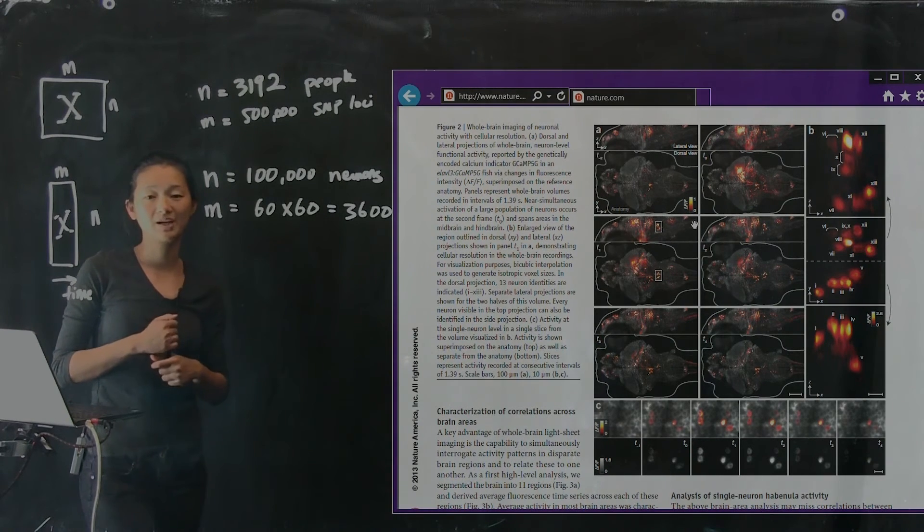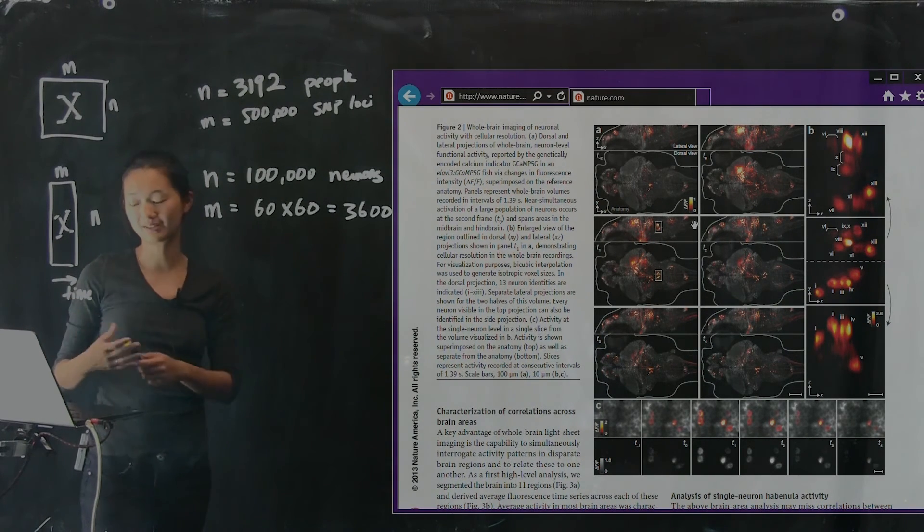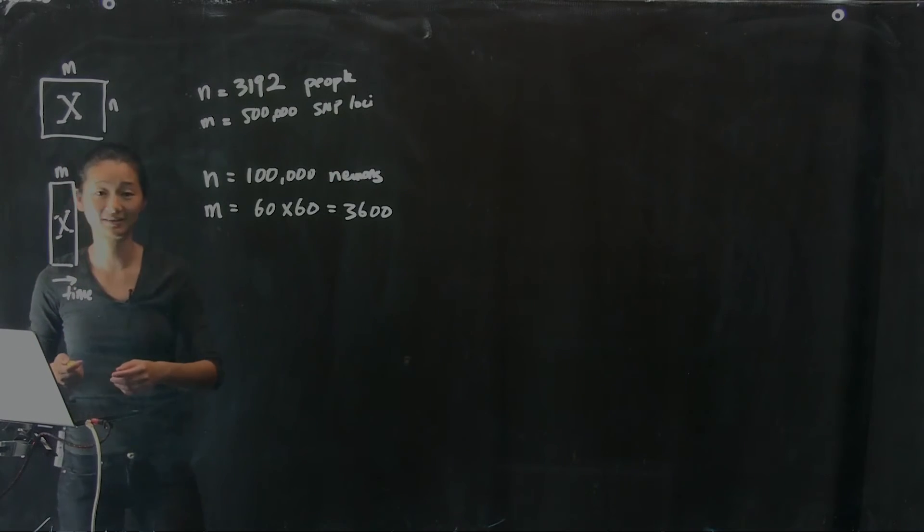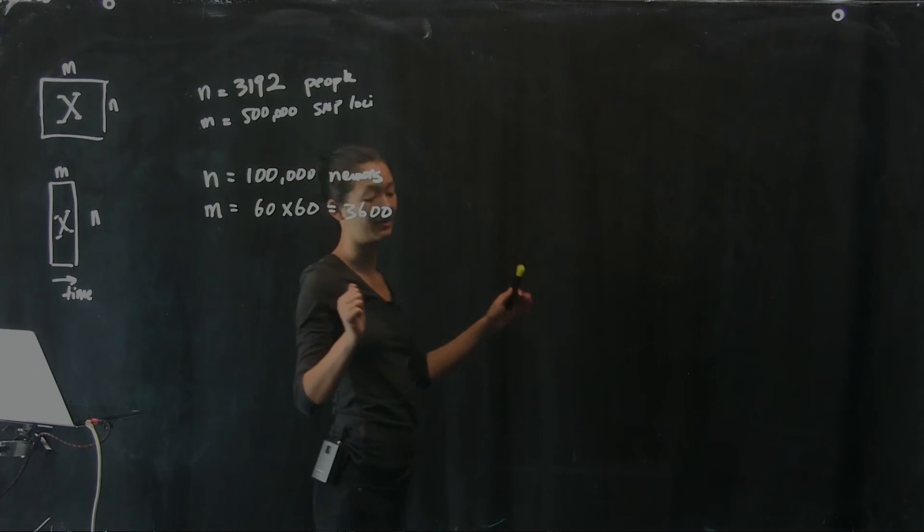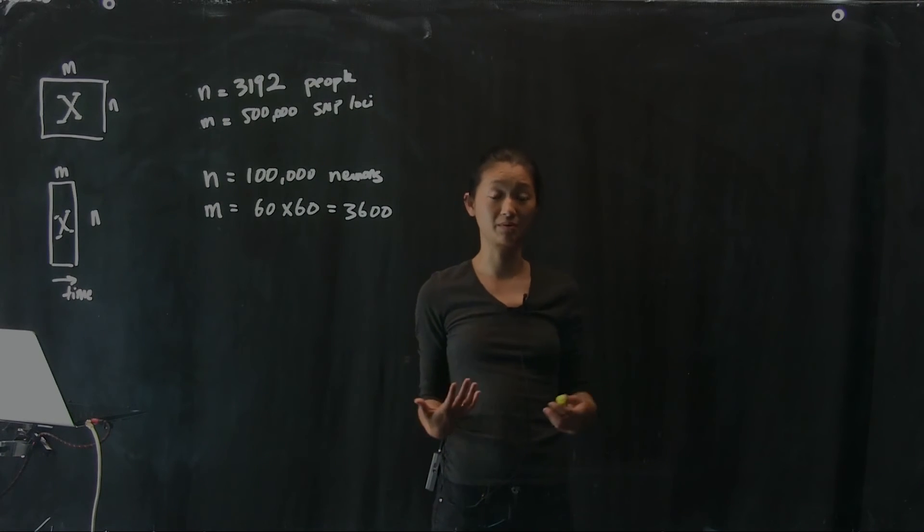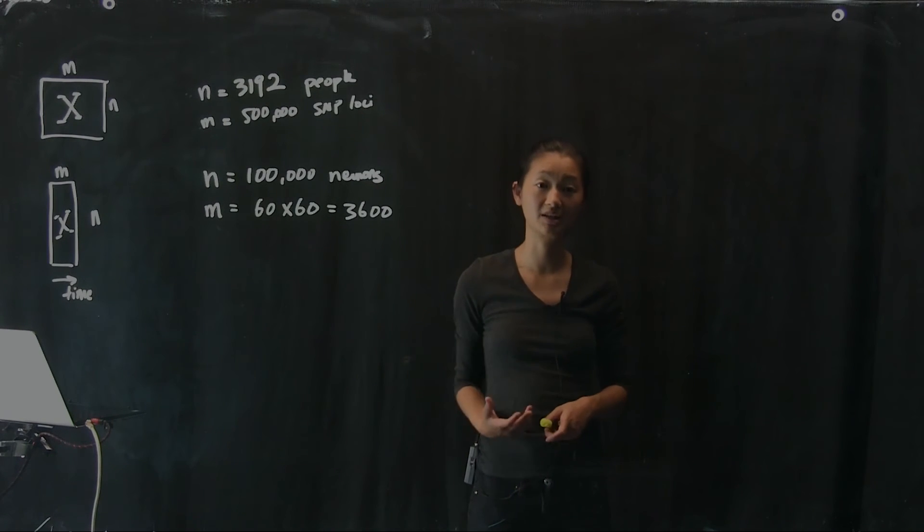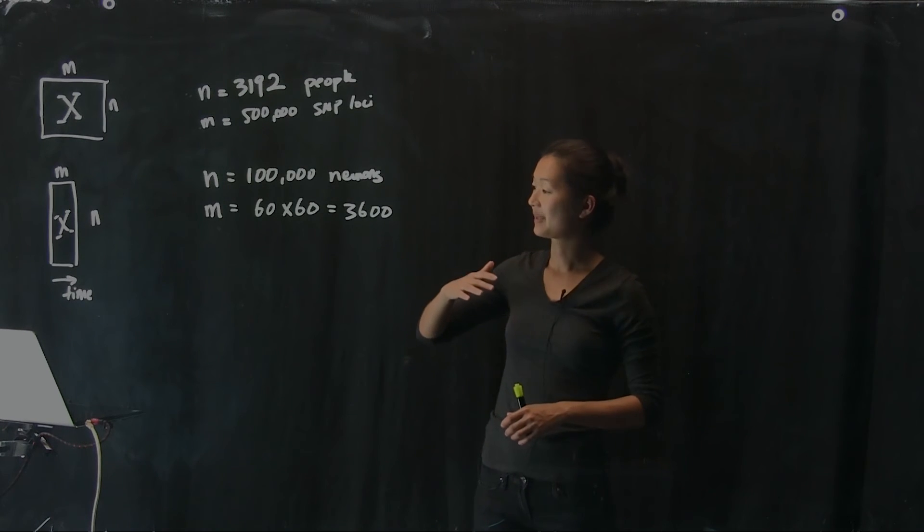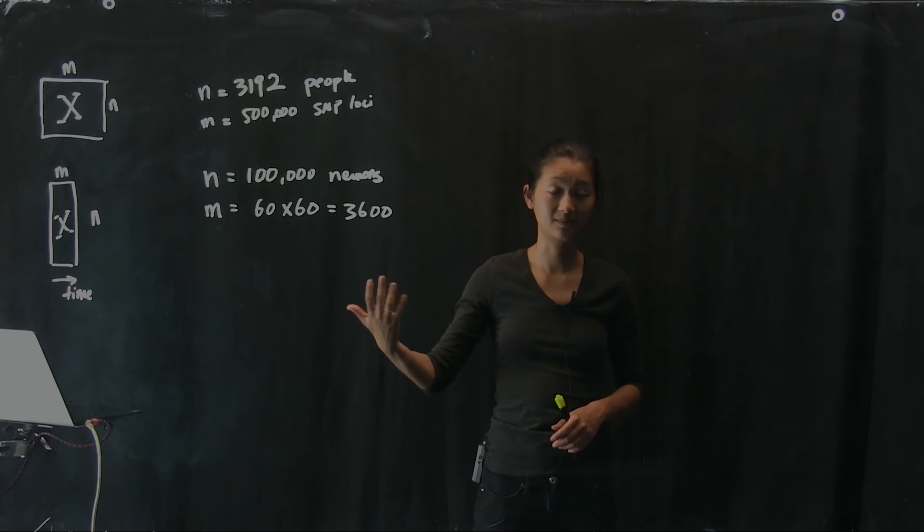And so if we're able to reduce the dimensionality of this X matrix and analyze the data that way, perhaps we can learn something about the functional organization of the brain on a cell-by-cell basis, because we have this new technology and this new data set. And so what I'm trying to convince you of is that here are two examples, two concrete examples.